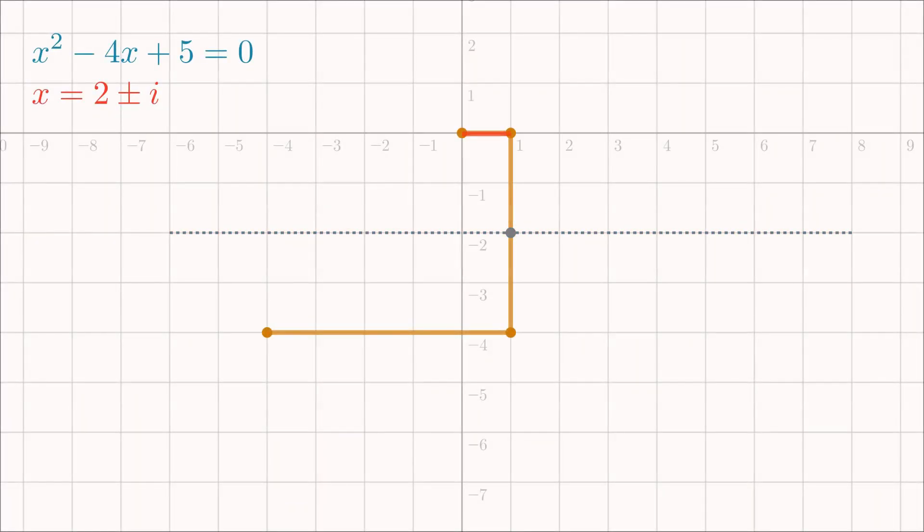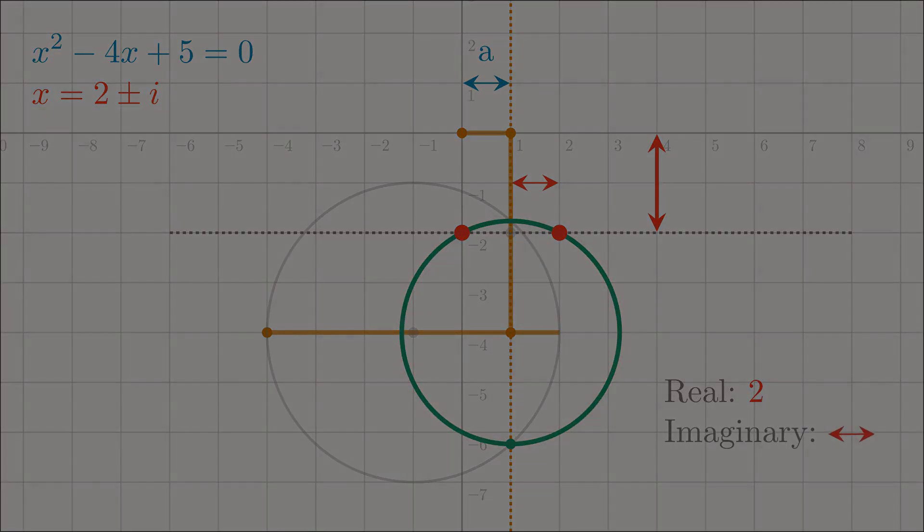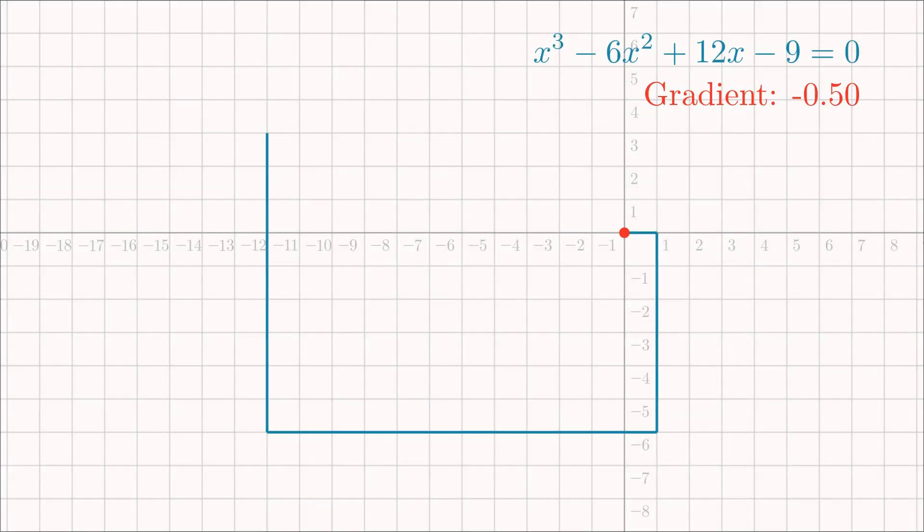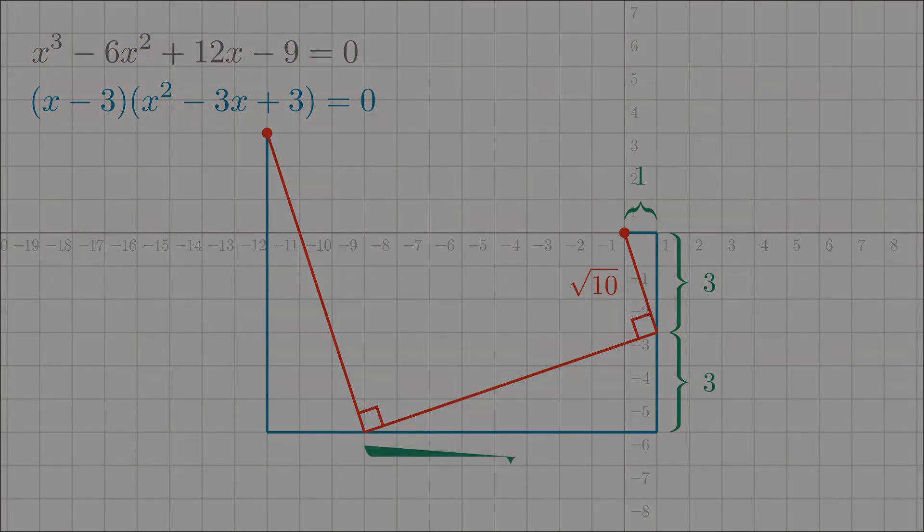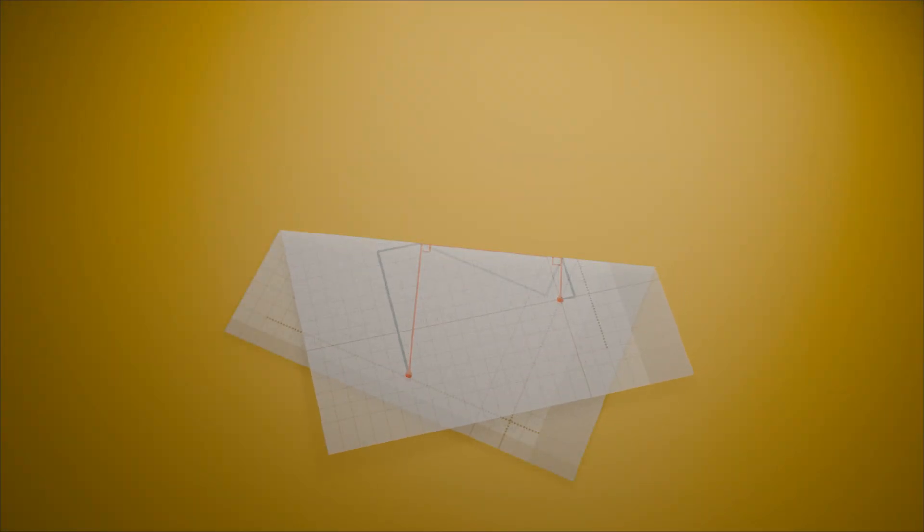And there you have it, Lill's method. A beautiful way of using circles, lasers and origami to solve polynomials. Even going as far as finding complex solutions with a single piece of paper. So next time you see a polynomial, don't just think formulas. Think geometry. Think rays and zigzags. Circles and intersections. Lill's algorithm never became a mainstream tool. It's not practical compared to modern computation. But as a window into the hidden beauty of algebra and geometry working together, it's unforgettable.